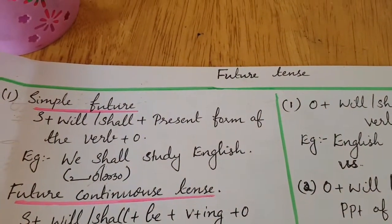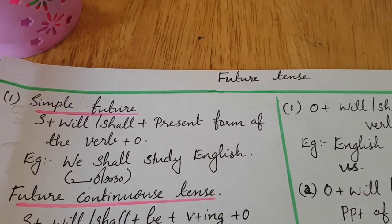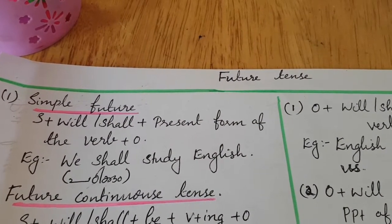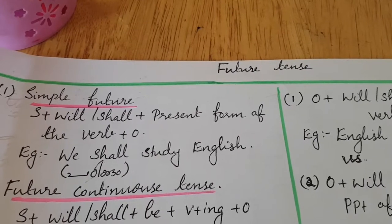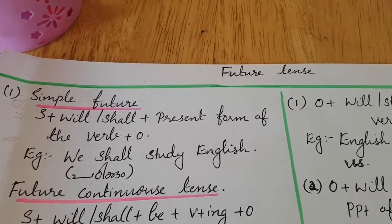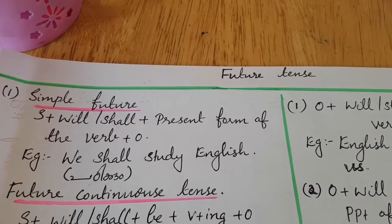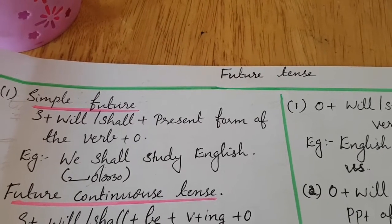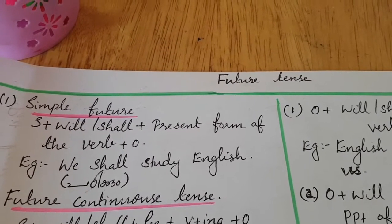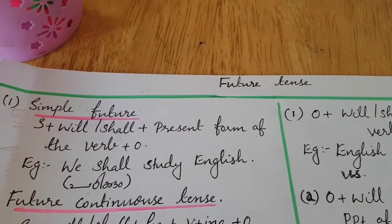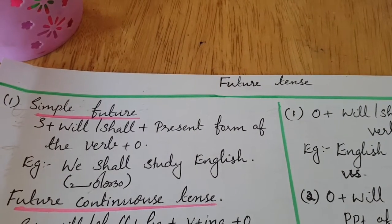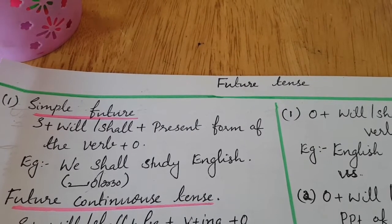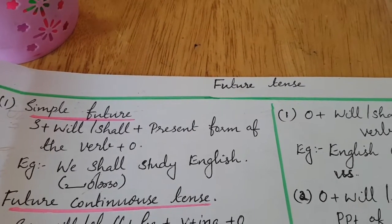First one: simple future. The form is subject plus will or shall plus present form of the verb plus object. In future tense, we use will or shall — it depends on the subject. Then the present form of the verb.